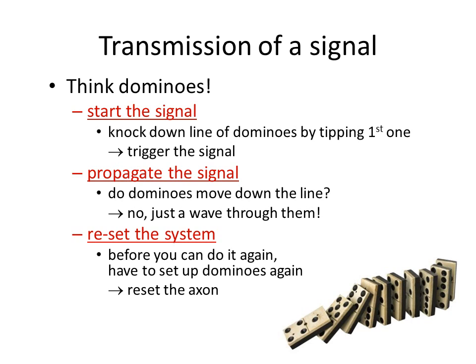If you think about dominoes, the first domino doesn't move — it stays in the same place after it falls over. However, it is the next domino that will hit the next one, that will hit the next one. Even though those dominoes are not moving very far, it does send a wave down the line of them. That is what we are talking about in neurons — a wave through the sodium channels opening up. Then you have to reset the system. Before you can start again, you have to set up the dominoes again, which is like resetting the axon and getting ready to fire another impulse. So the three steps of nerve transmission are: the start of the signal, the propagation or sending of the signal down the line, and then the resetting of the signal.